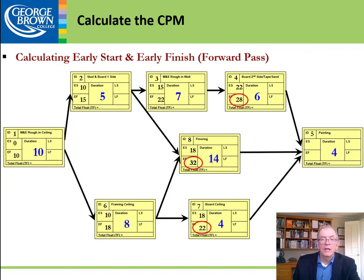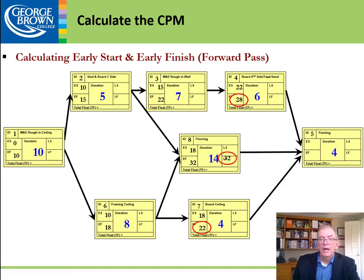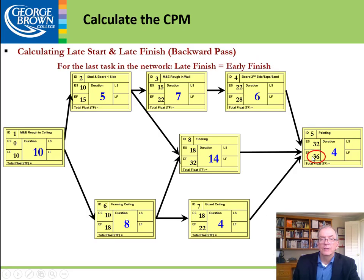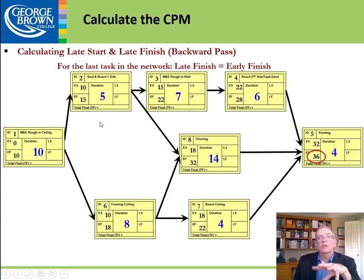We've got merging activities again — 28 and 22 — and we take the larger number, which is 32. That becomes our early start; early start plus 4 gives us an early finish of 36. The forward pass is complete, and we now know this project is going to take 36 days from start to completion.